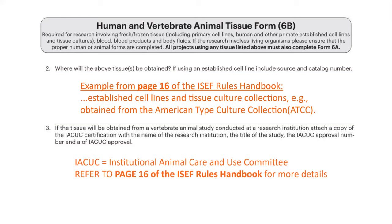For question three, the acronym IACUC is referenced — this is the Institutional Animal Care and Use Committee. If your human or vertebrate animal tissue is obtained from a vertebrate animal study conducted at a research institution, you need to attach the IACUC certification. This certification must identify the name of the research institution, the title of the study, the IACUC approval number, and a letter of IACUC approval. Page 16 of the ISEP Rules Handbook goes into more detail about this. Keep in mind that you must get all this approval from IACUC before starting any research. If your tissue is not obtained from a study conducted at a research institution, you need not answer this question.